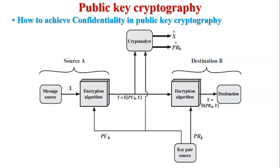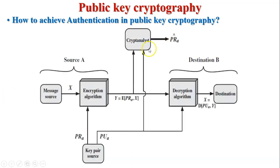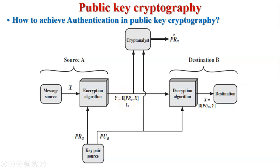Next, how to achieve authentication in public key cryptography. See this figure — this is source A (the sender) and destination B (the receiver). The sender wants to send data to the receiver. X is the original plaintext. The input to the encryption algorithm is the original message, and it will be encrypted by the private key of the sender (PRa), generating ciphertext Y. Y will be put on the secure communication channel so this message will be received by all network users.